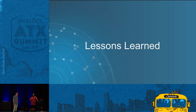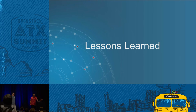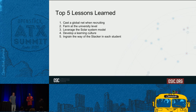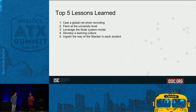What you're here for is: what did we learn? We're going to take you through our lessons so hopefully you can avoid the pitfalls we hit. There are five key lessons. Number one: cast a global net when recruiting. Number two: farm the university level. Three: leverage the solar system model. Four: develop a learning culture. And five: ingrain the way of the stacker in each student.